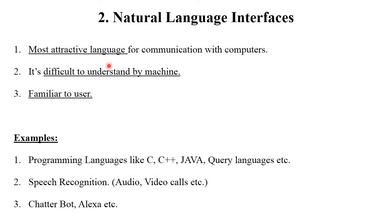The second interaction style is natural language interface. We are all familiar with natural language — it means our own language. It is the most attractive language for communication with computers, but it is difficult for the machine to understand. Natural language is understood by the user, not the machine. Each and every machine understands binary language, which is always in 0 and 1 format. Natural language interface is familiar to the user. For example, programming languages like C, C++, Java, and query languages — in all these programming languages we use natural language, for example English.